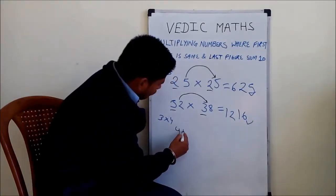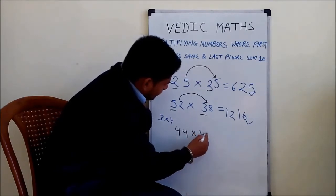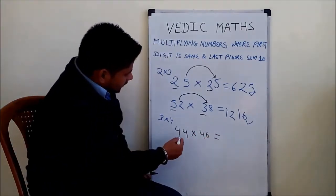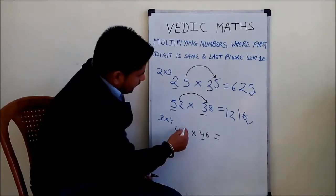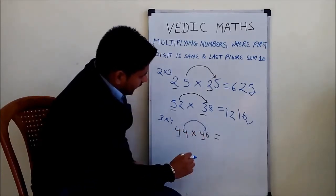For 44 into 46, the first digit is the same, that is 4, and the last digits sum up to 10, that is 4 plus 6 equals 10.